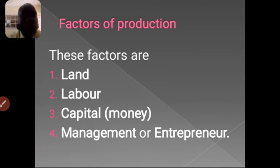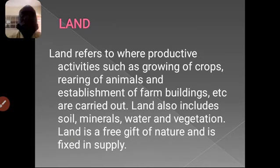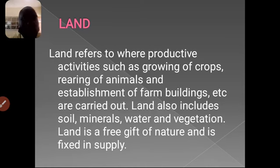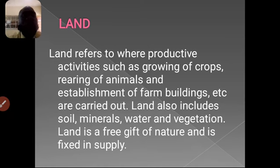When we are talking about land, land refers to a place where productive activities such as growing of crops, rearing of animals, and establishment of farm buildings are being carried out. Most of our production takes place on land, and on that land we can also discuss about water. Because most agricultural activities make use of water. So that is why land includes the soil that you are using, the minerals in the soil, the water body, and the vegetation. All these are embedded in what you refer to as land.